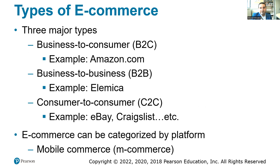There are three types of e-commerce. Business to consumer (B2C) is like Amazon and eBay, where consumers buy from a business. Business to business (B2B) is where businesses buy from other businesses — examples include Alibaba and McMaster.com. Consumer to consumer (C2C) includes auctions like eBay, Craigslist, and Facebook Marketplace, where consumers can buy from other consumers.